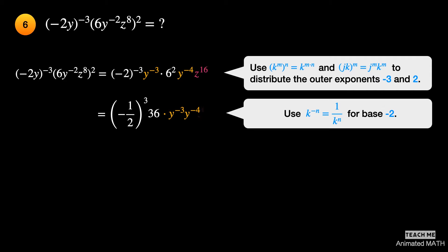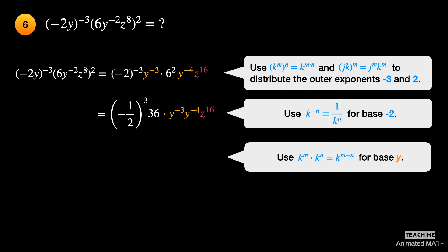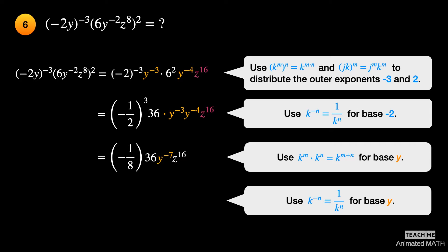Group the constants together and the variables together so that it is easier to spot bases that can be further simplified. Expanding negative one-half cubed gives us negative one-eighth. Use the fifth property for base y — the new exponent of y is negative 3 plus negative 4, or negative 7. Use the fourth property for base y since its exponent is negative. 36 and 8 can both be divided by 4. The simplest form is negative 9z to the 16th power divided by 2y to the 7th power.